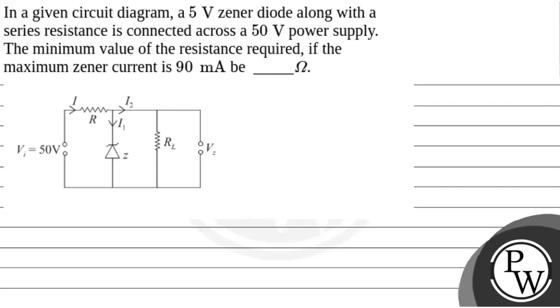Let's see the question. In a given circuit diagram, a 5 volt Zener diode along with a series resistance is connected across a 50 volt power supply. The minimum value of the resistance required if the maximum Zener current is 90 milliampere will be blank ohms.